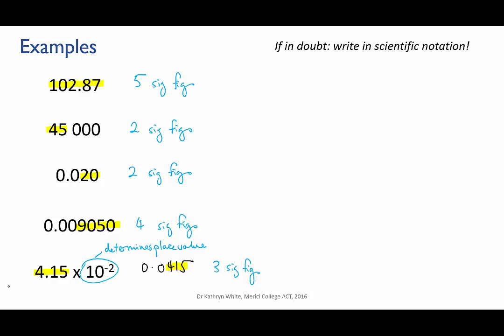And this leads me to a useful tip. If you're ever in doubt about sig figs, convert to scientific notation. Scientific notation gets rid of non-significant digits. The first part of the number shows you all the sig figs, and the second part just adjusts the place values.